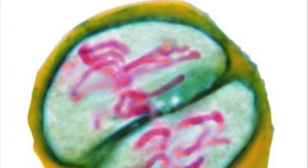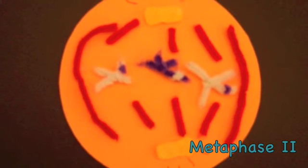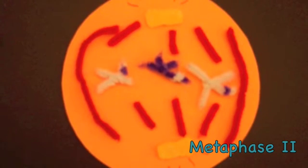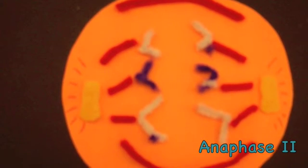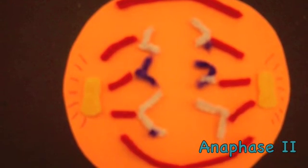In metaphase II, chromosomes line up along the metaphase plate. Each of these chromosomes is a set of sister chromatids. These sister chromatids are not identical because of the crossing over that occurred during prophase I. Microtubules connect to the chromosomes. In anaphase II, the microtubules begin pulling sister chromatids apart toward opposite ends of the cell.